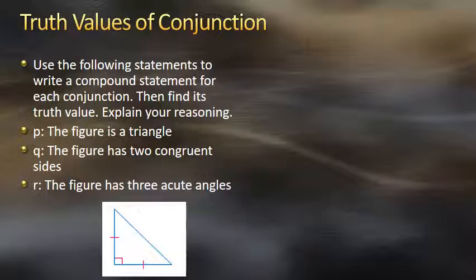This first slide corresponds to page 99, example one: truth values of conjunctions. We're given the following: use the following statements to write a compound statement for each conjunction, then find its truth value and explain your reasoning. We have statement P: the figure is a triangle. Statement Q: the figure has two congruent sides. And statement R: the figure has three acute angles.